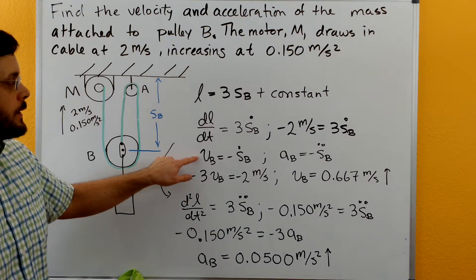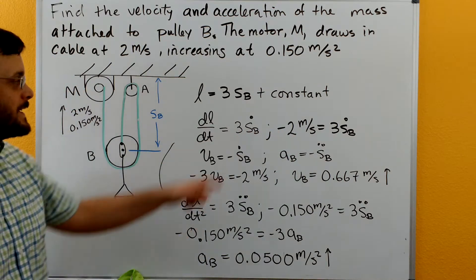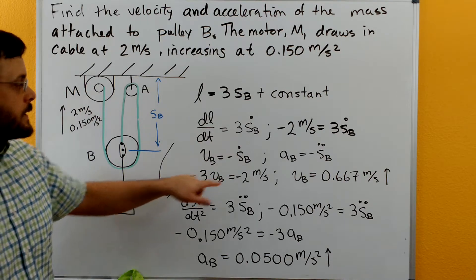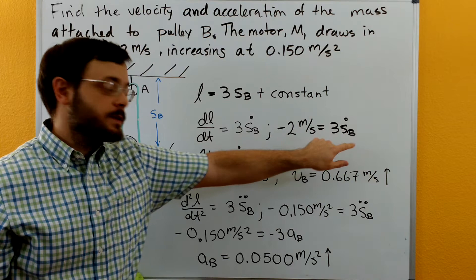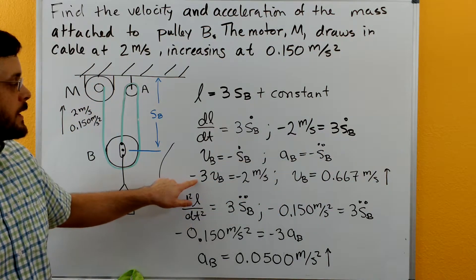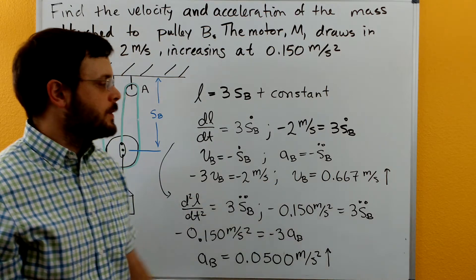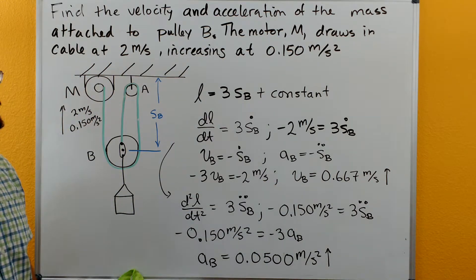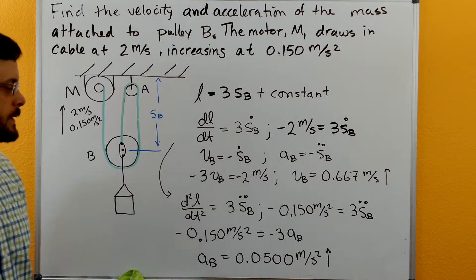Now we can plug this expression in for our dL/dt formula. We have negative 2 m/s equals three times SB dot, so now we have negative three times VB. Solving for VB, we get VB is 0.667 meters per second. We get a positive number, so that means it's in the positive Y direction.